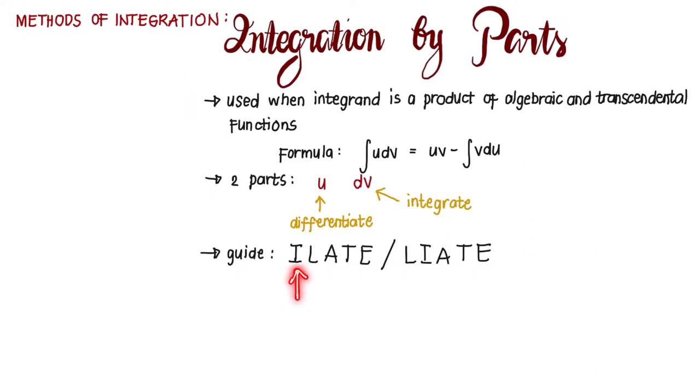So I refers to inverse trigonometric, L refers to logarithmic, A refers to algebraic, T refers to trigonometric, and E refers to exponential.